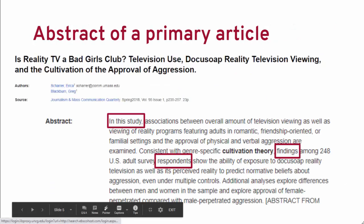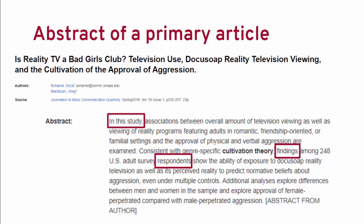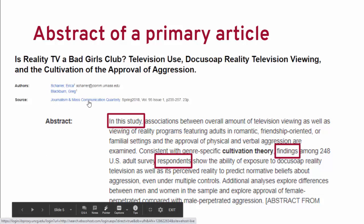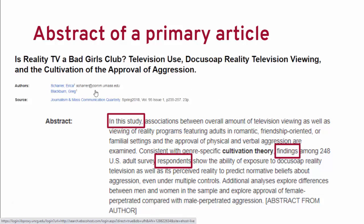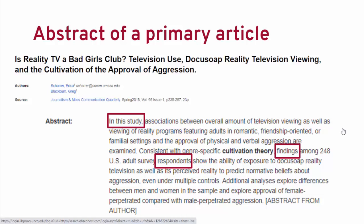Let's look at a couple of examples. Here I have a screenshot of an abstract of a primary article. The article is titled 'Is Reality TV a Bad Girl's Club? Television Use, Docu-Soap Reality Television Viewing, and the Cultivation of the Approval of Aggression.' I found this article in the communication studies database Communication and Mass Media Complete by searching 'cultivation theory,' one of the theories covered in CST 300. This article is from the journal Journalism and Mass Communication Quarterly. I have red boxes around three things in the abstract that tipped me off that this was probably a primary article.